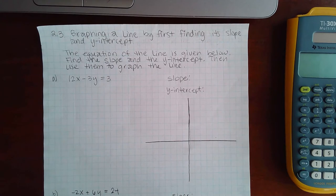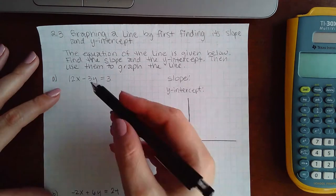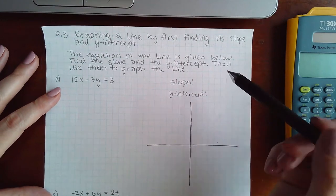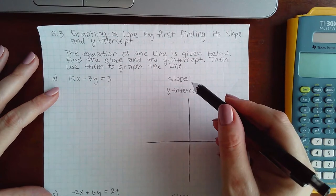Okay, graphing a line by first finding its slope and y-intercept. It's the same thing as before except now I have to use this information to draw. Before I can do that, we need to learn something about slope.